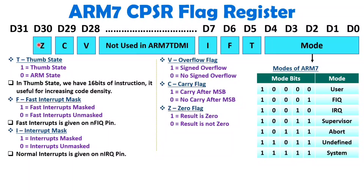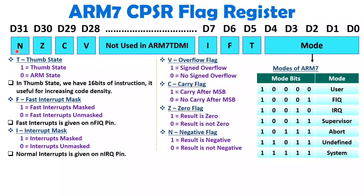D30 is the Z flag, the zero flag. If the result is 0 after execution of any instruction, this bit gets set to 1; if the result is not 0, this bit is 0. D31 is the N bit, the negative flag, which indicates whether a given result is negative or positive. If the result is negative, this bit will be 1; if it equals 0 after instruction execution, the result is not negative.